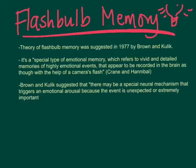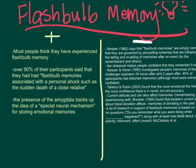This is all taken from your Crane and Hannibal textbook, pages 91 and 92. Because the command term is evaluate, we're going to go over the strengths and the limitations of the theory of flashbulb memory as proposed by Brown and Kulik.